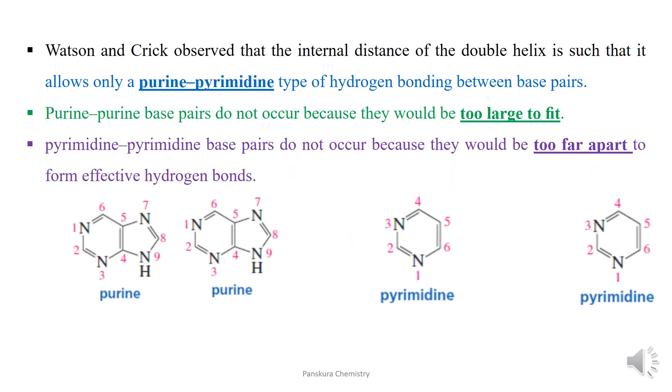Watson and Crick observed that the internal distance of the double helix is such that it allows only purine-pyrimidine type of hydrogen bonding between base pairs. Purine-purine and pyrimidine-pyrimidine base pairs are not allowed in DNA.